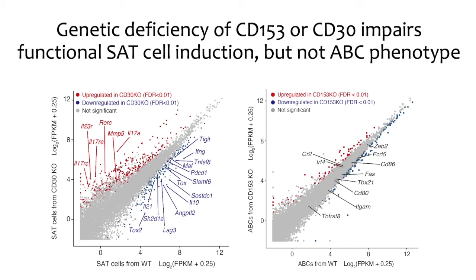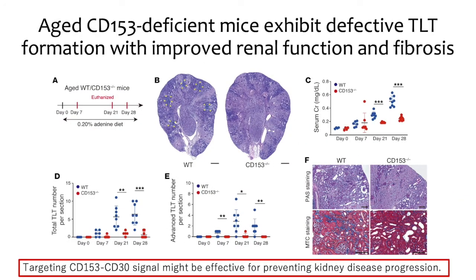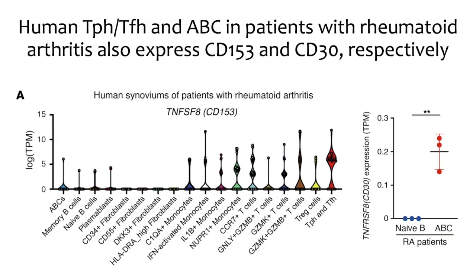These results indicate that the CD153–CD30 signal controls SAT-cell but not ABC identity genes. To evaluate the impact of targeting this signal on kidney function, we induced adenine nephropathy in CD153 knockout mice and found they exhibited defective TLT formation with improved kidney function and fibrosis. Therefore, targeting CD153–CD30 signaling might be effective for preventing kidney disease progression. Importantly, we also confirmed that human TPH/DFH and ABCs in patients with rheumatoid arthritis also expressed CD153 and CD30 respectively.